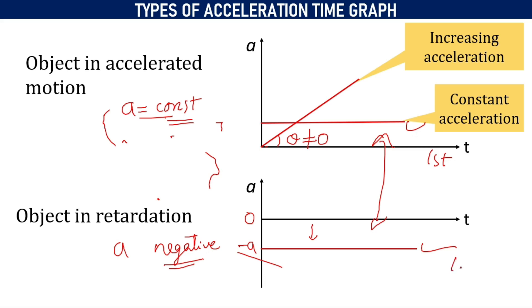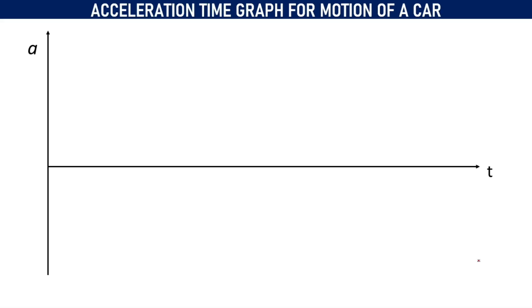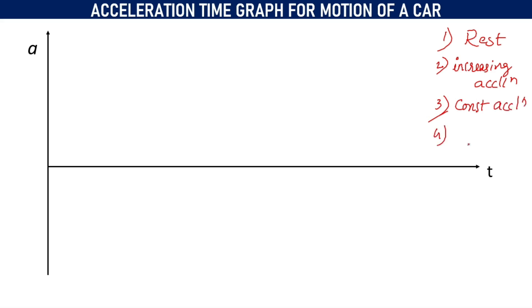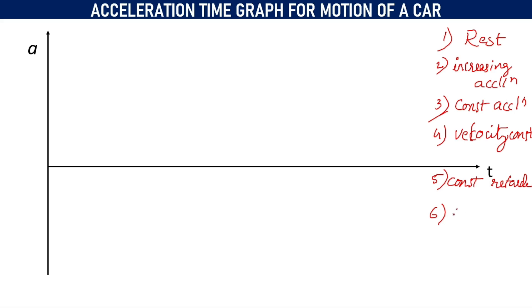Now, we are going to consider the classic example of motion of a car. The car will start from rest and increase its acceleration. Then it will start to move with constant acceleration. Once it reaches a certain velocity, the velocity will be constant — the car moves at constant velocity. After reaching constant velocity, we are going to apply the brakes so that there will be a constant retardation. Finally, the car will be brought to rest.